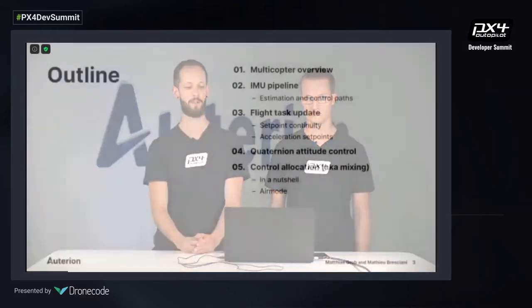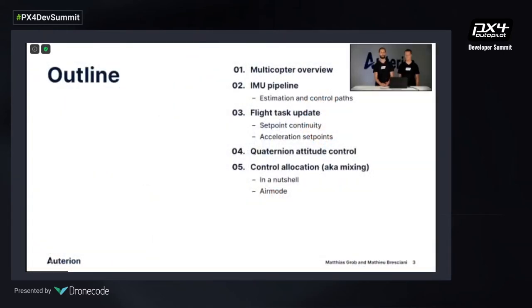We'll first give you an overview of the multi-copter pipeline, then specifically on the IMU side of the pipeline covering different paths for estimation and control. Then Matthias will give an overview and an update on flight tasks from last year and explain the quaternion attitude control. Finally, I'll talk about control allocation.